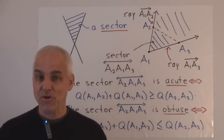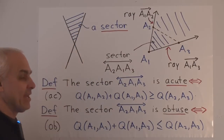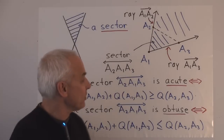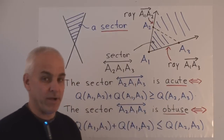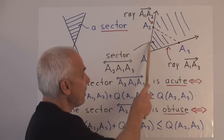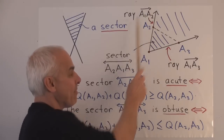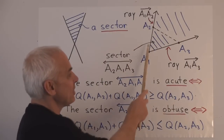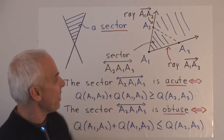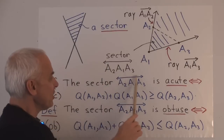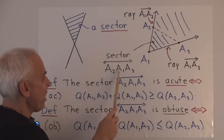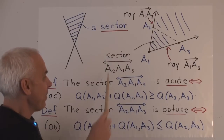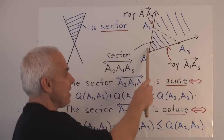To answer this question, let's introduce a bit of new terminology. If we have two lines in the plane, it divides the plane into four different regions — let's call any one of those regions a sector. Another way of describing a sector is in terms of a point and two rays emanating from that point. We call the ray going from A1 in the direction of A2 the ray A1→A2, and the ray from A1 toward A3 the ray A1→A3. Two such rays determine a sector unambiguously. We write this sector as A2→A1→A3, where the middle point is the actual vertex.